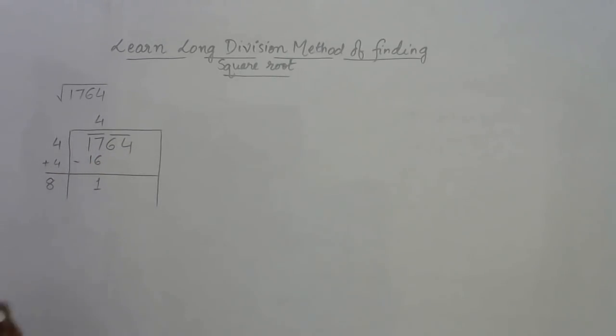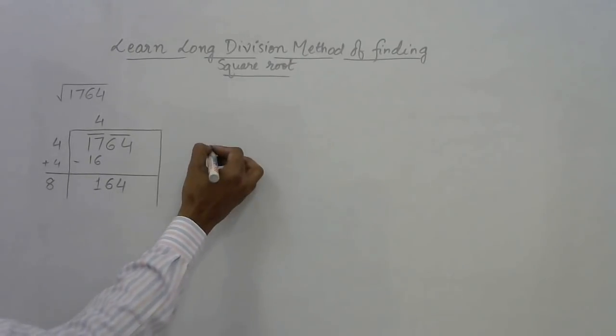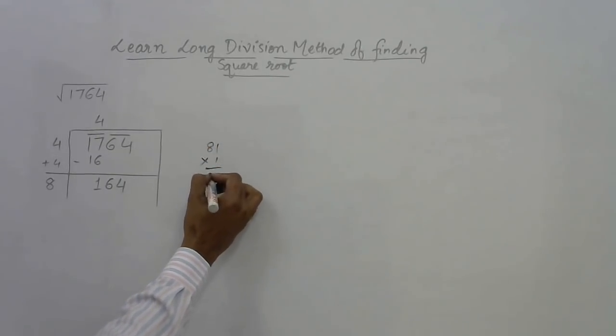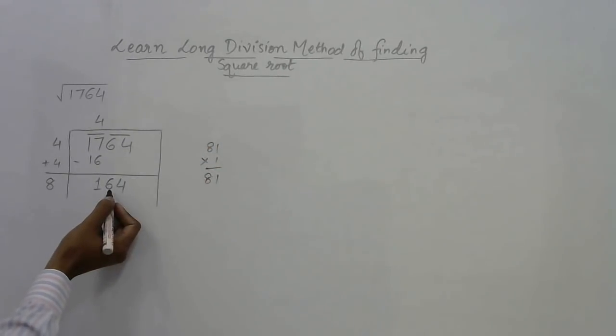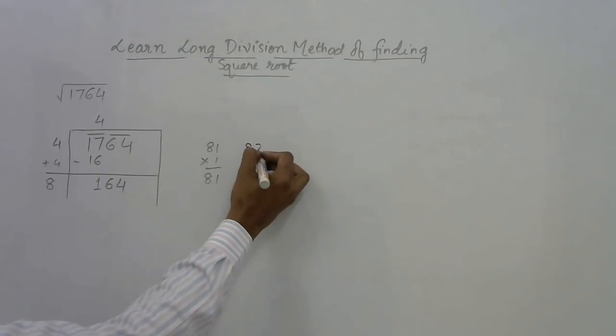8 is greater than 1, so bring down the second pair, 64. Now I need a number at the units place, making this a two digit number. Suppose I choose 1, then 81 multiplied by 1 gives 81, which is far less than 164.